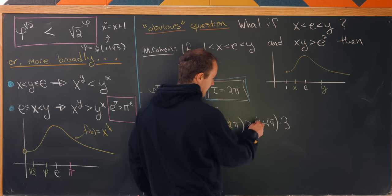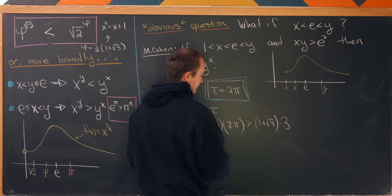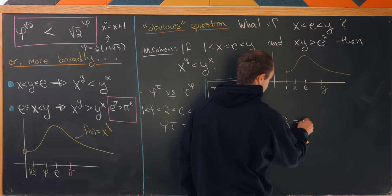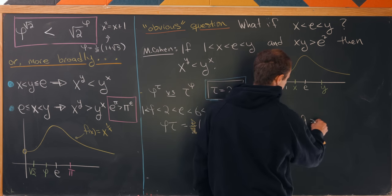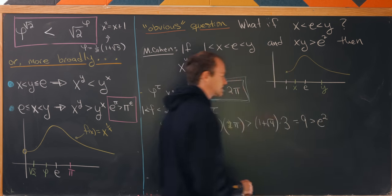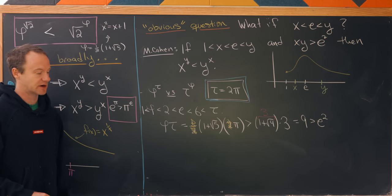So, anyway, this is going to be equal to 3. So, in the end, we have 3 times 3, which is 9. But 9 is fairly clearly bigger than e squared because e is less than 3.